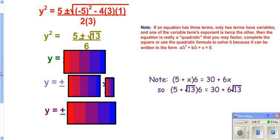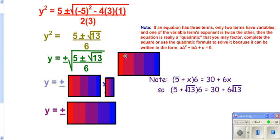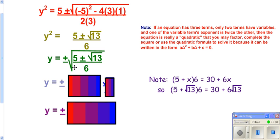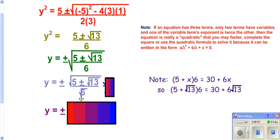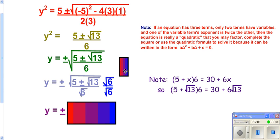That's what y squared equals, and we're trying to solve for y. So you'd have to take the square root of both sides. Take the square root of the right side and apply the big root to the top and the bottom. That leaves a root in the bottom. Since you don't want to leave roots in the bottom, multiply the top and bottom by root 6 to eliminate that root.